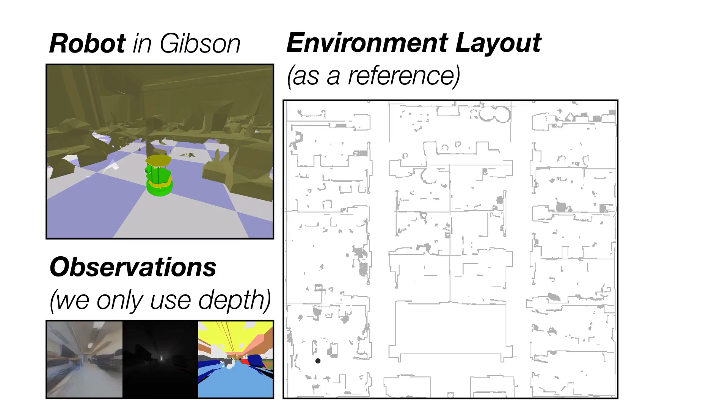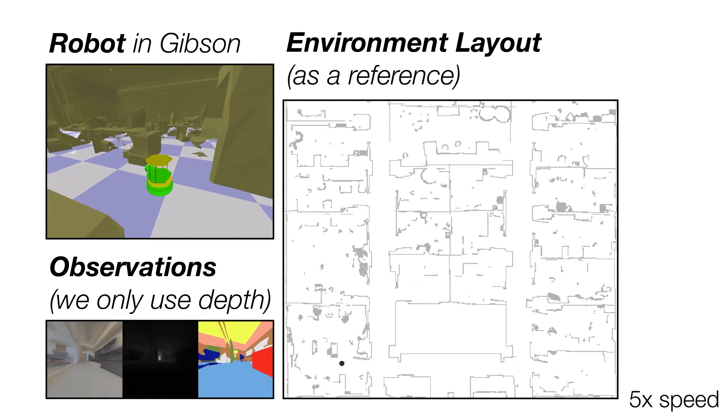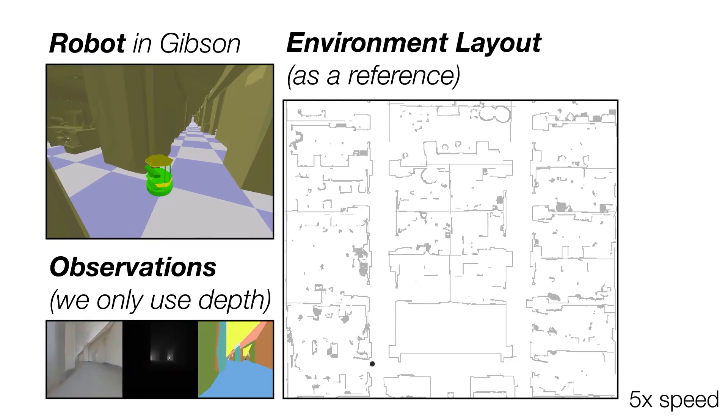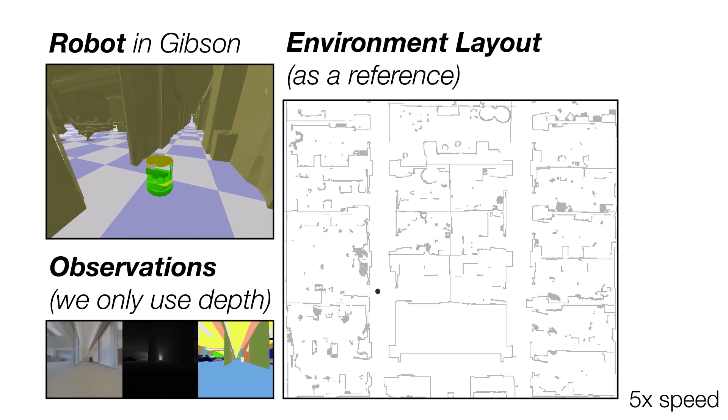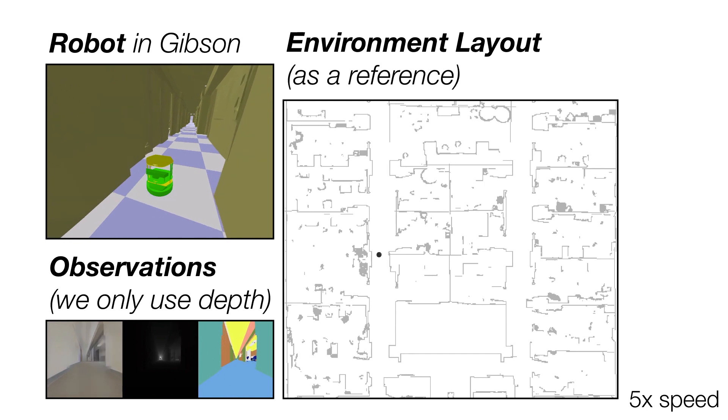We now show another example. In this case, the robot has to navigate from the bottom left room to the top right office. Note that in order to complete this plan, the robot has to pass clutter very closely.